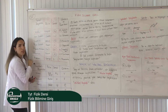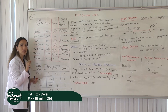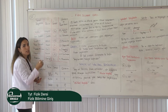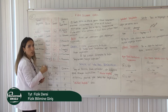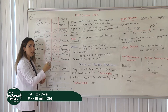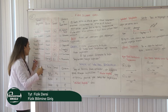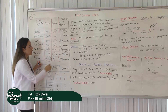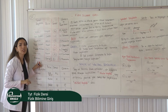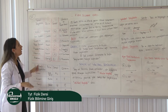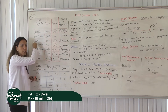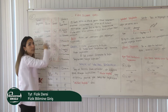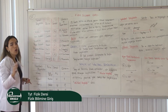Zaman, uluslararası birim sistemine göre saniyedir. Saniyeyi küçük s harfi ile gösteririz. Kitaplarda zamanla ilgili bir soru olduğunda küçük t harfi zamanı belirtecektir. Zamanı kronometre ile ölçeriz. Böylece temel büyüklüklerin birimini, sembolünü, gösterimini ve ölçüm aletlerini öğrenmiş olduk.